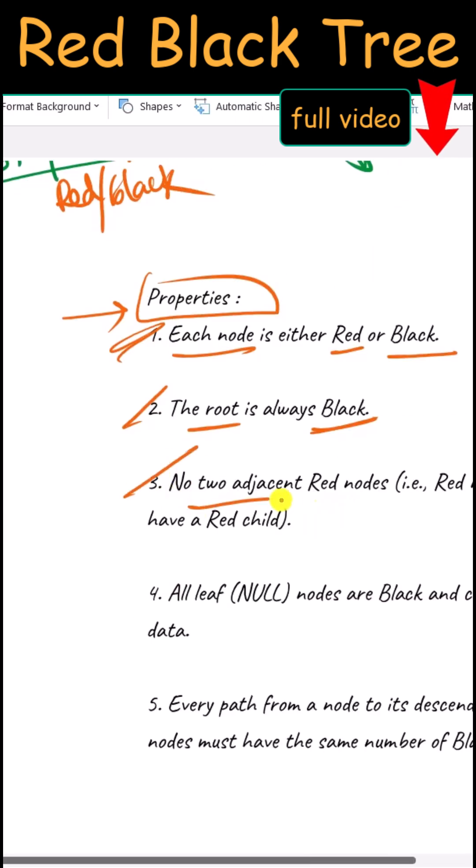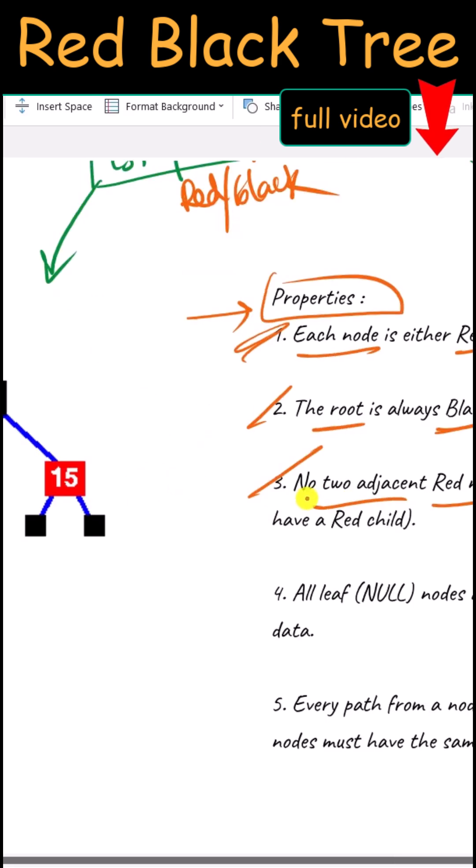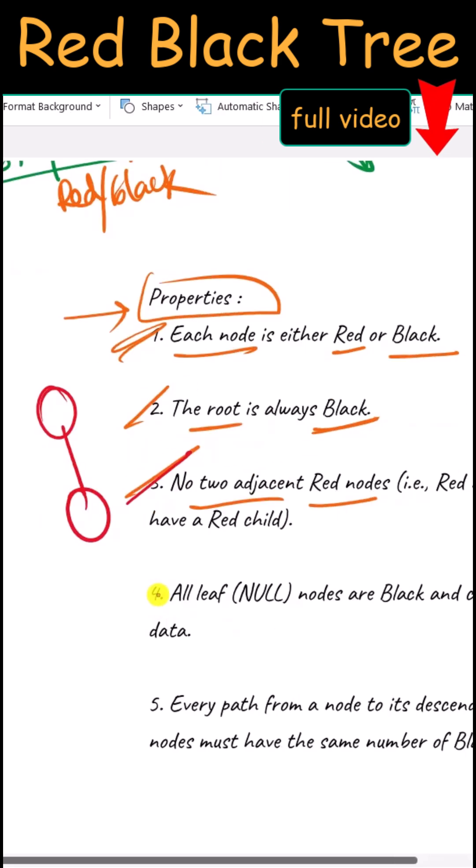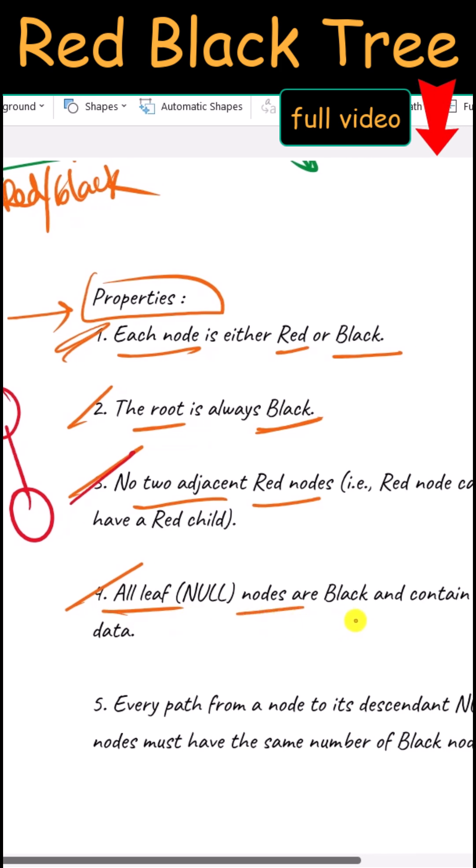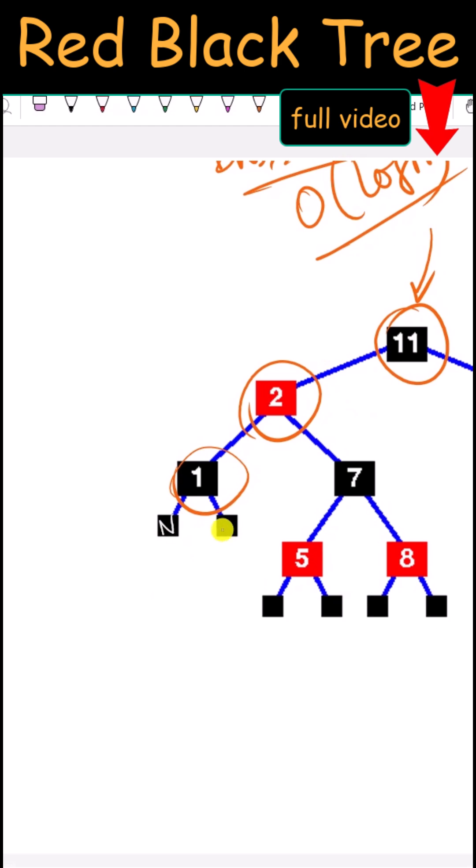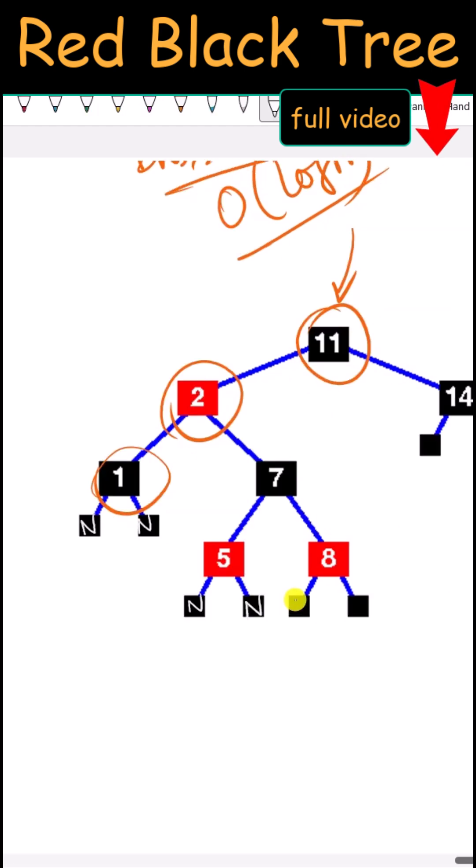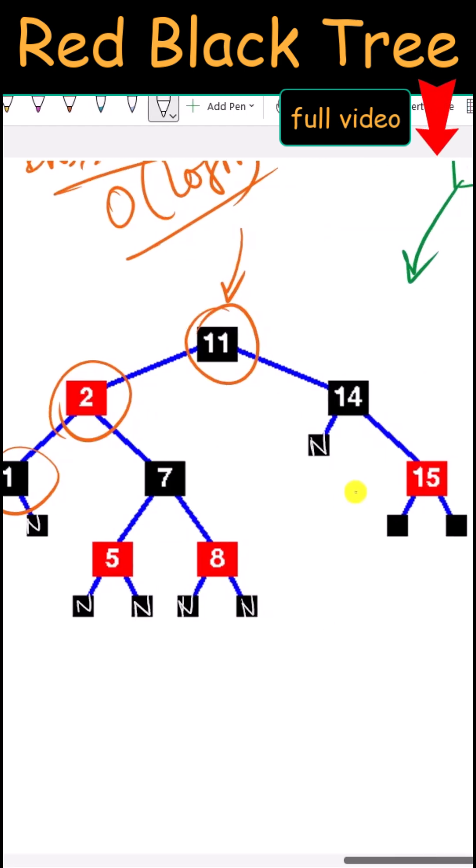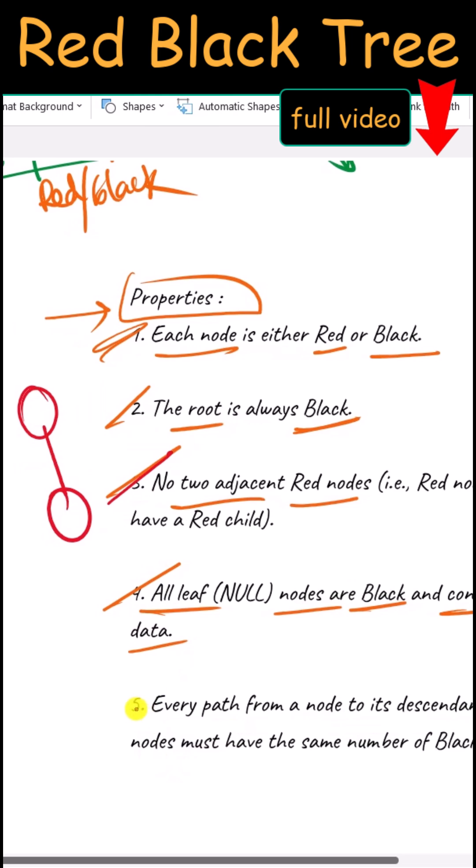Third, no two adjacent nodes can be red, meaning two red nodes cannot be directly connected. Fourth, all leaf nodes should be black and should not contain any data. The leaf nodes are null, so they do not contain any data.